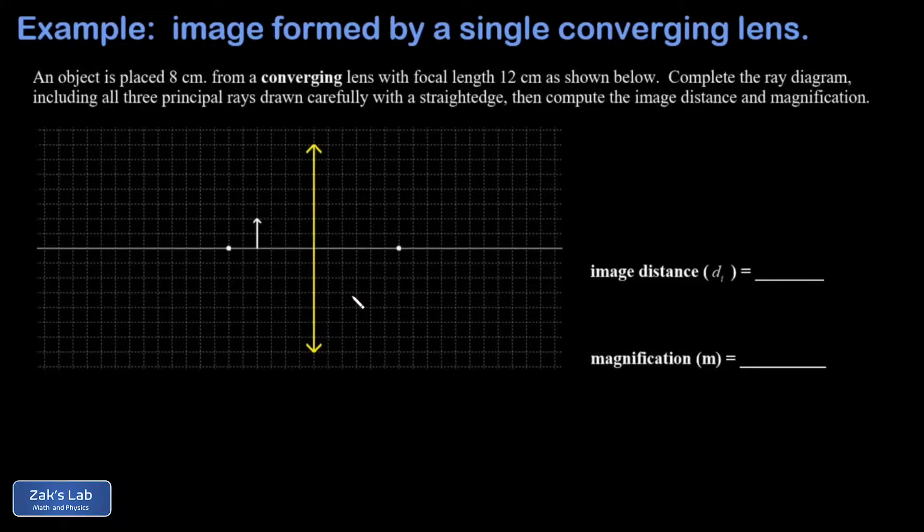We have an object inside the focal length of this lens, and what we're trying to do here is a complete ray diagram showing all three principal rays to form the image. We're going to approximate the location and magnification of that image based on the grid spaces in the diagram, and then we'll actually use the thin lens equation to compute these things precisely.